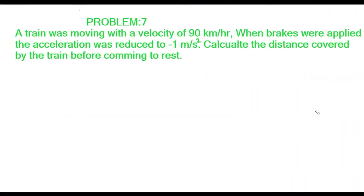Let us look at problem 7. A train was moving with a velocity of 90 kilometers per hour. When brakes were applied, the acceleration was reduced to minus 1 meter per square second. We have to calculate the distance covered by the train before coming to rest.